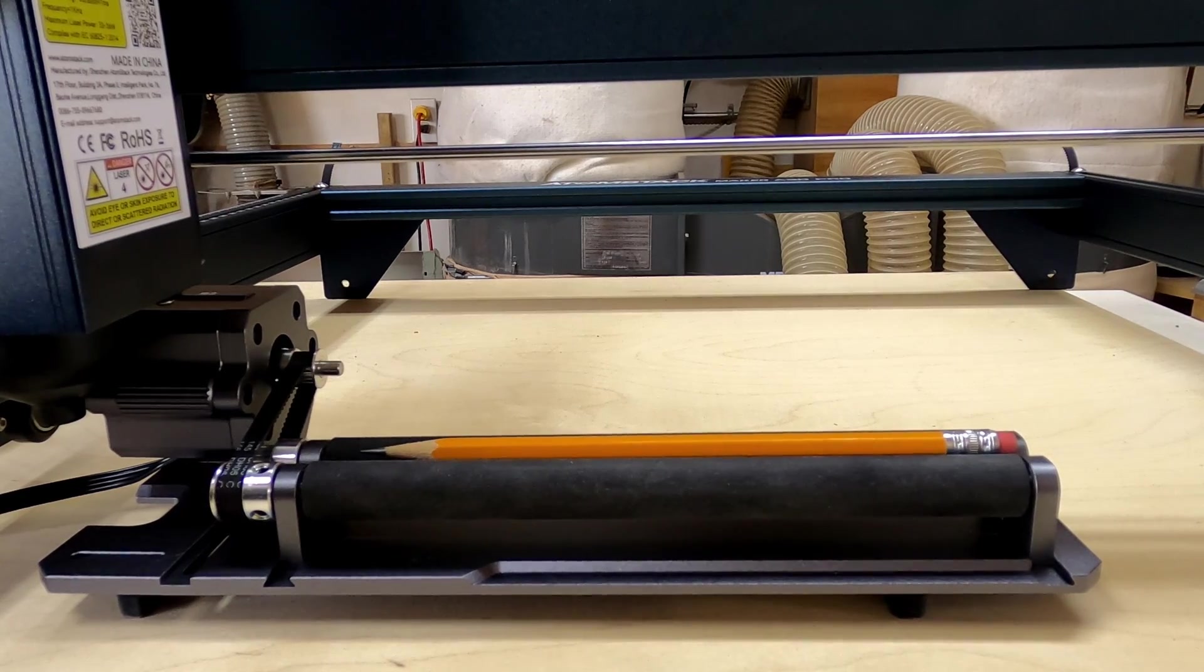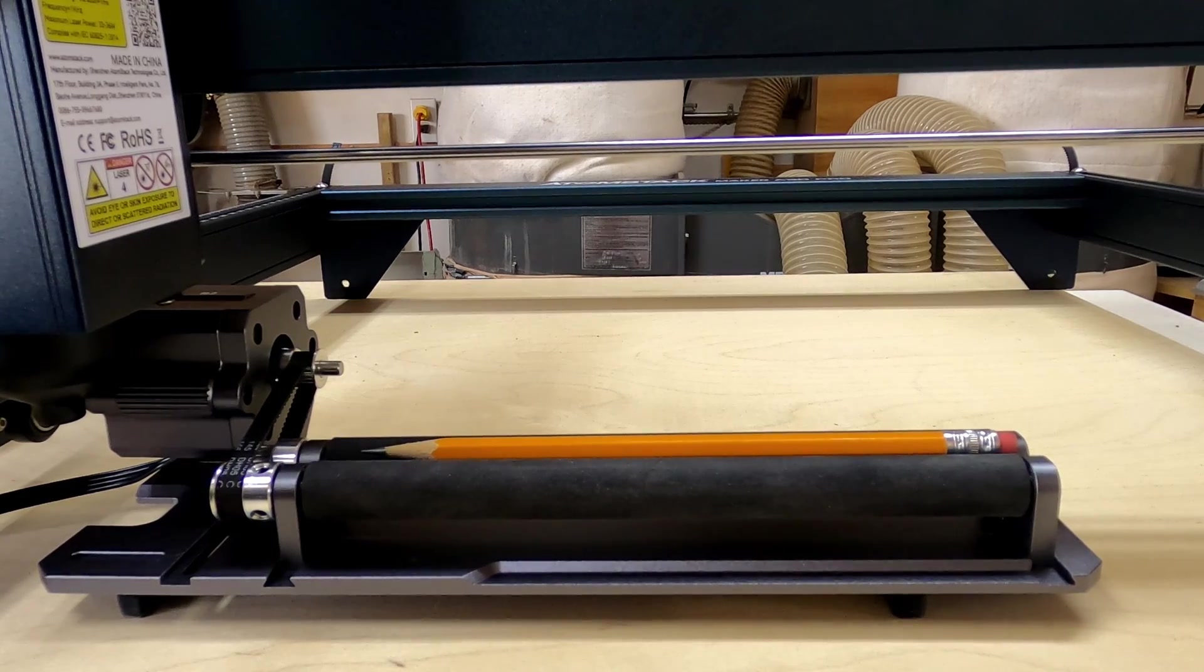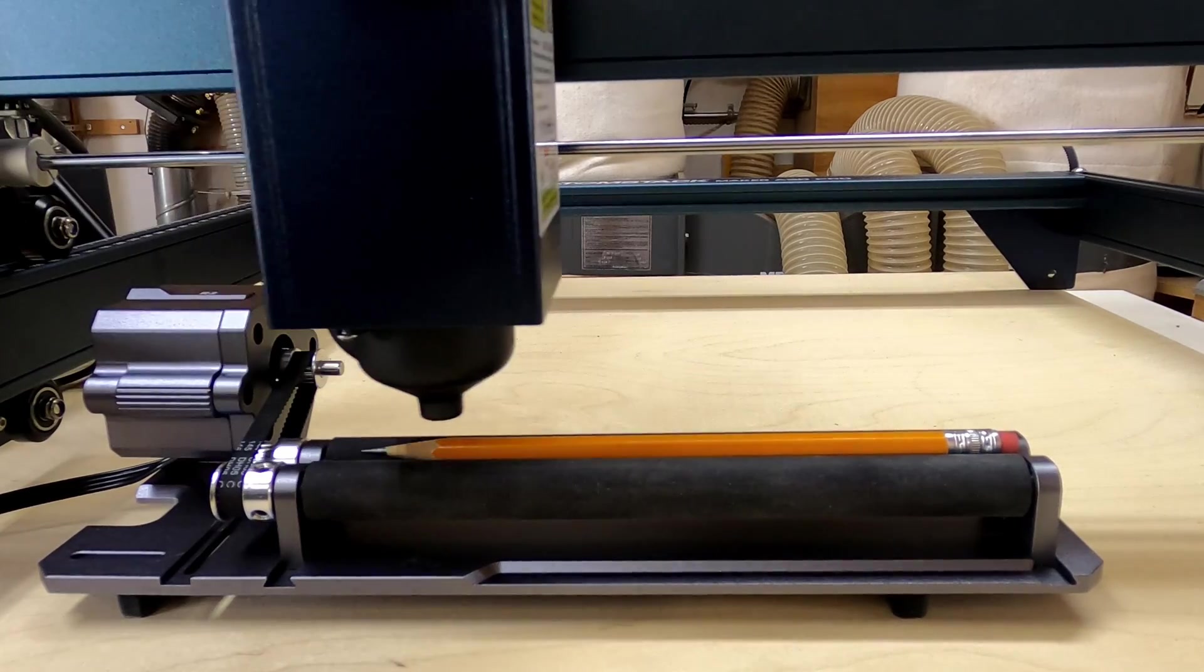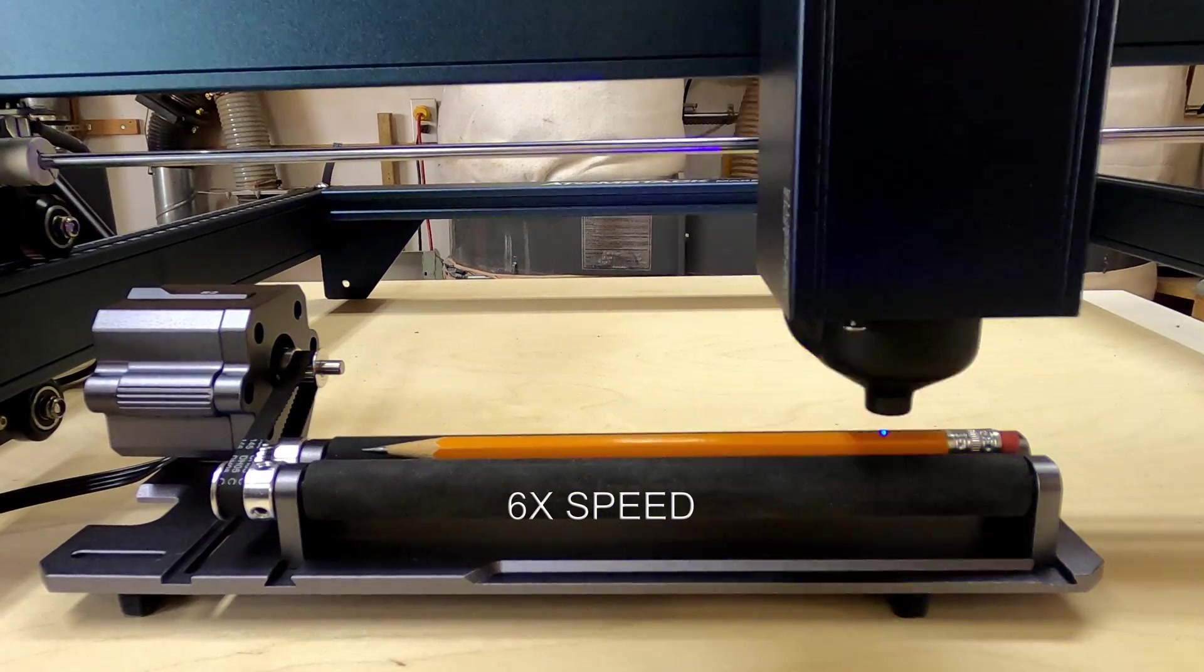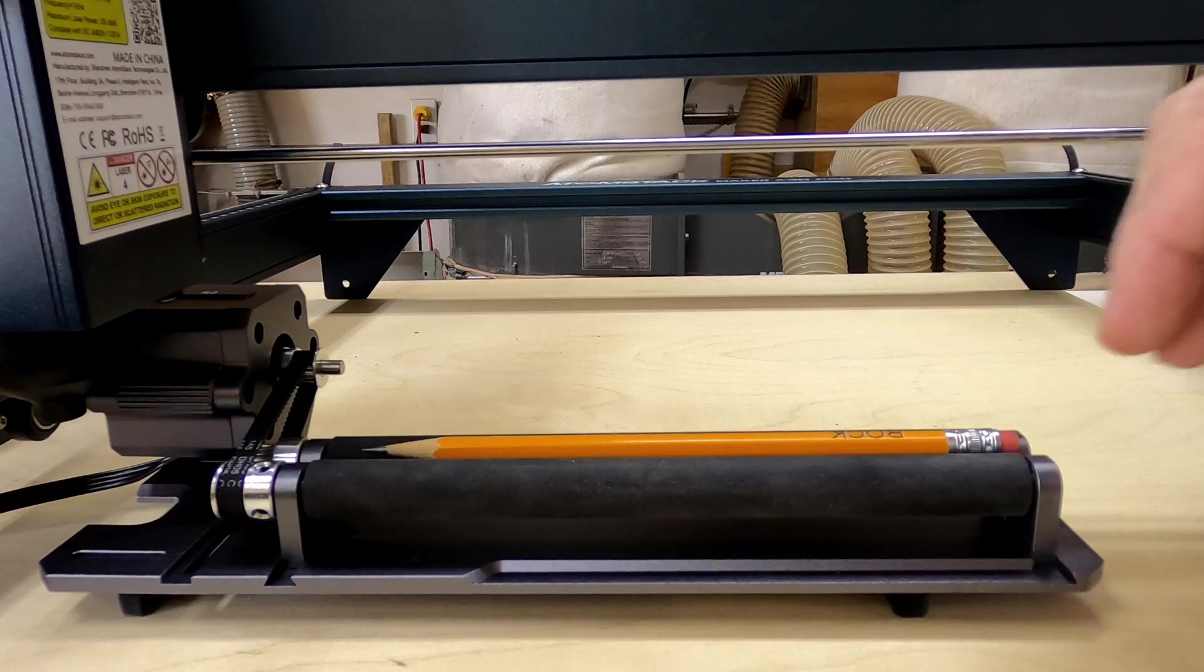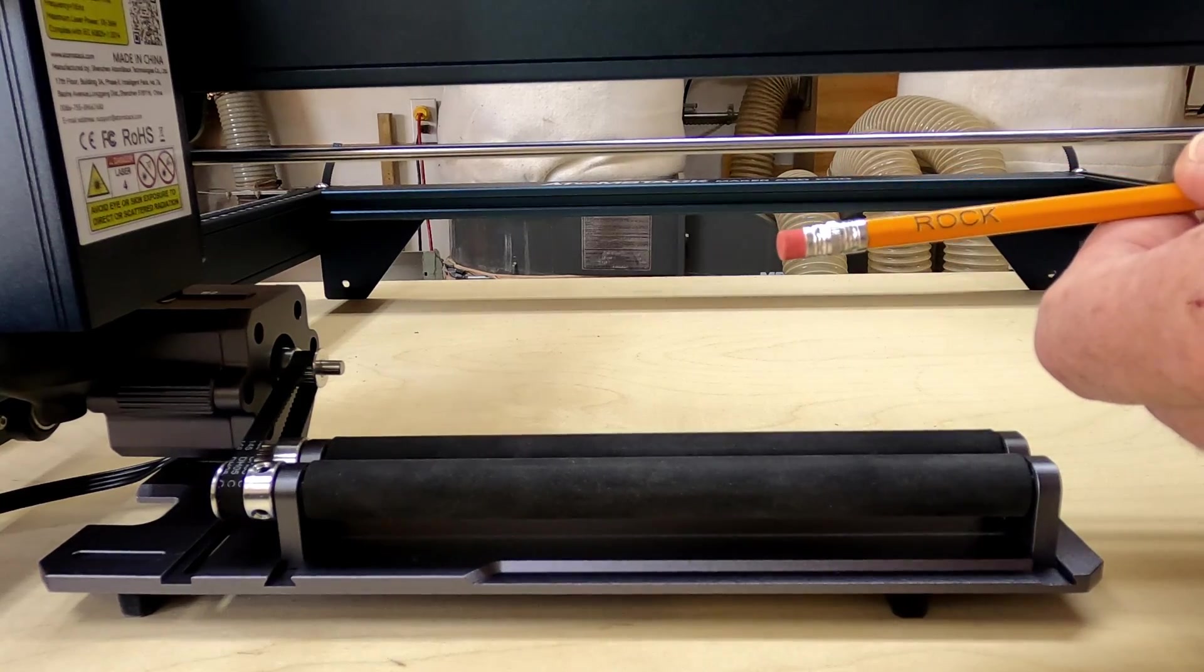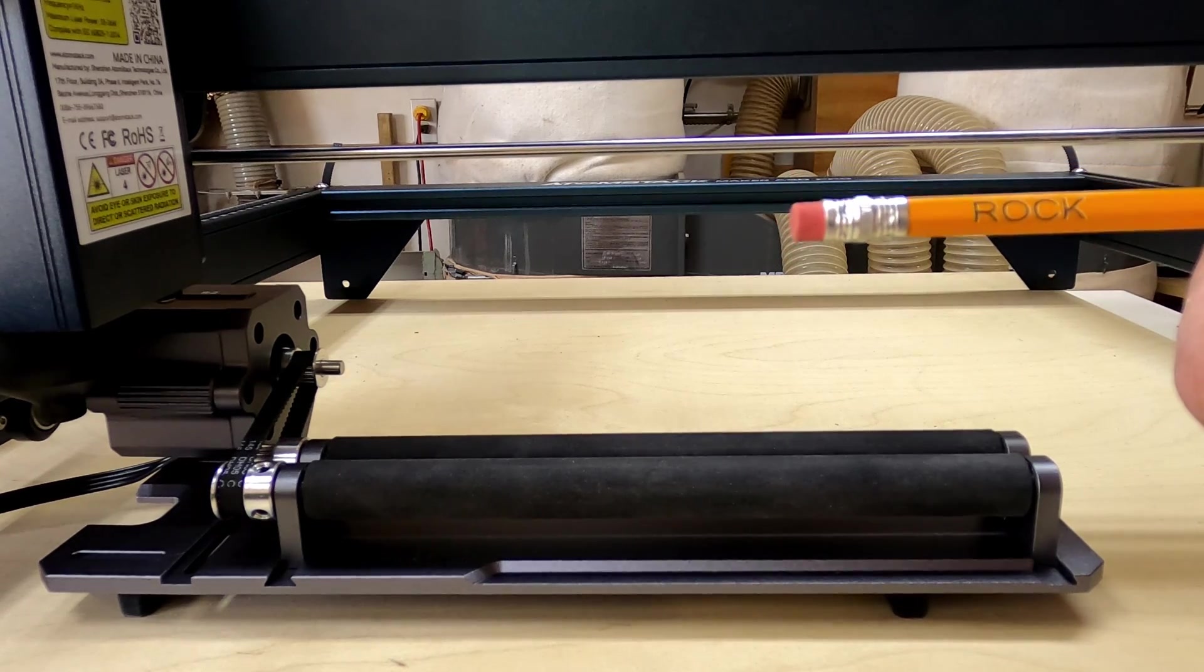Now what if you want to do something that's not round, something hexagonal like the pencil that's on there now? Will that work? Well let's move this over into position and find out. Well it looks to me like it does not need to be perfectly round, that came out just fine.